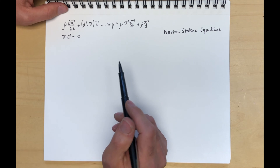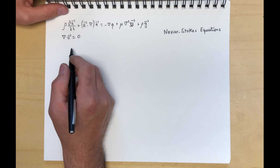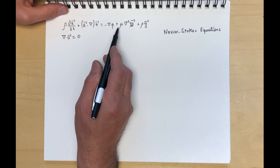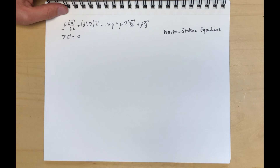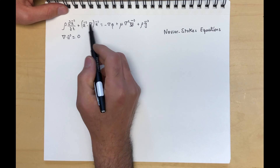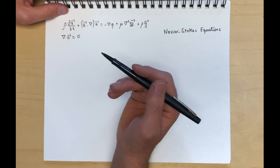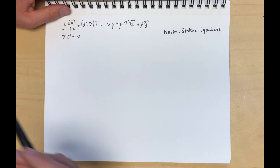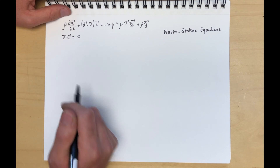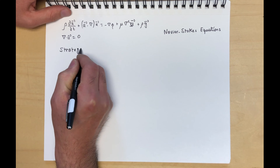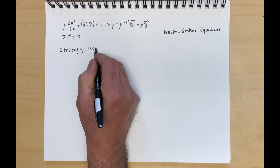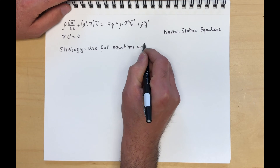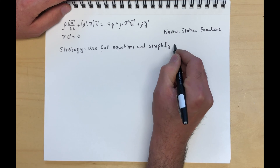Now that we've derived these equations, it is time to start applying them to different problems. The strategy we will adopt is to take these equations in whatever form they appear — Cartesian, cylindrical, spherical — and start knocking out terms that are not part of the problem or are negligible, so that we simplify the equations while maintaining good accuracy and obtain a simple analytical solution. The strategy is: use full equations and simplify as needed.